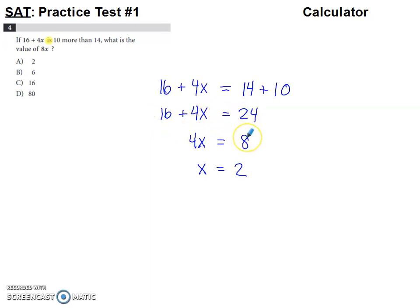So 24 minus 16 leaves us with 8. Undo this multiplication between the 4 and the x, and we get our answer of 2.